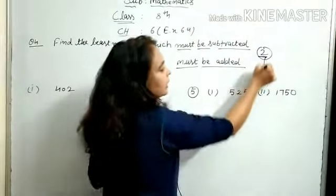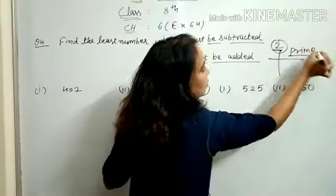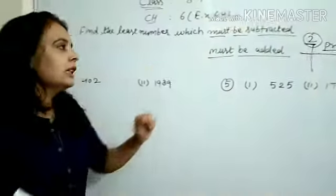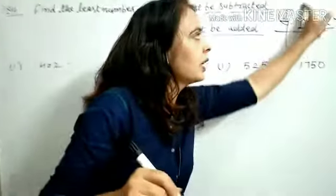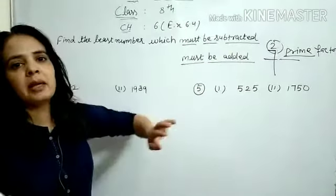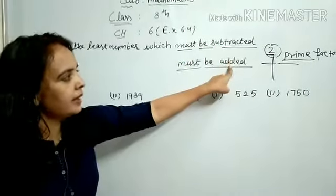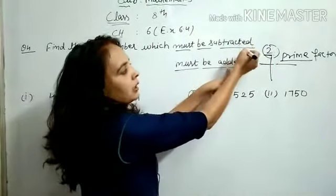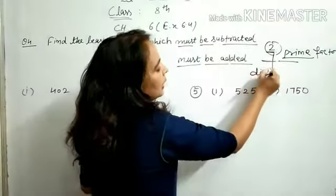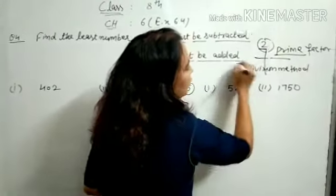If you have multiplication and division, use the prime factor method — we will not use the division method. These two question types are special. If you have to subtract or add to get a perfect square, then use the division method. Which method? Division method — to find the square root.